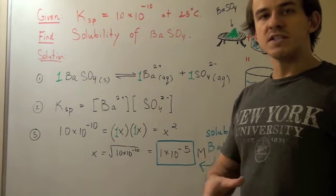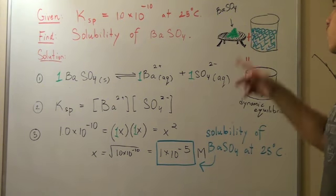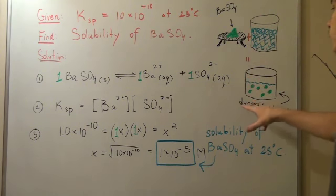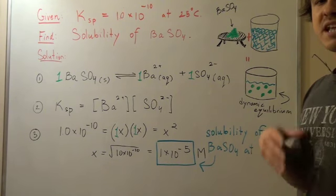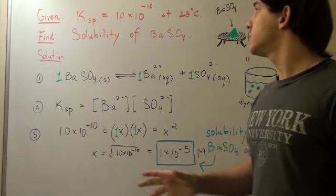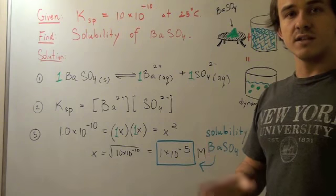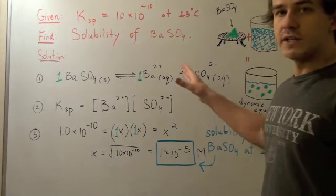In this problem, we're given some unknown amount of barium sulfate and water in a cup. We want to mix the two and wait for dynamic equilibrium to establish. Once equilibrium establishes, we're given that Ksp equals 1.0 times 10 to the negative 10 at 25 degrees Celsius.